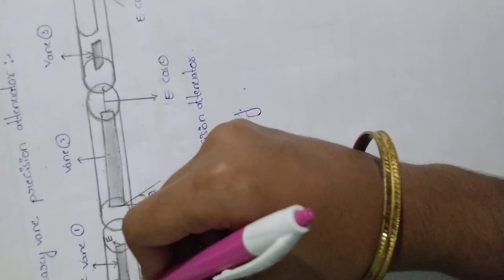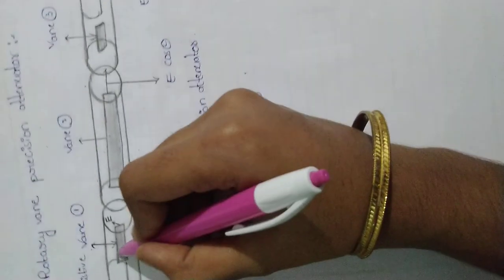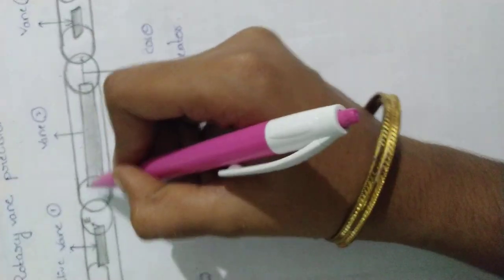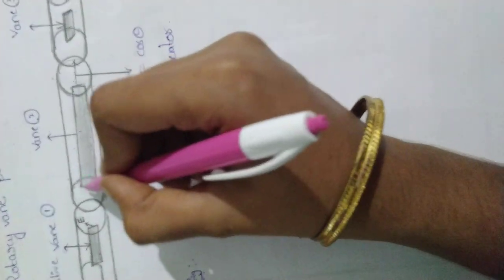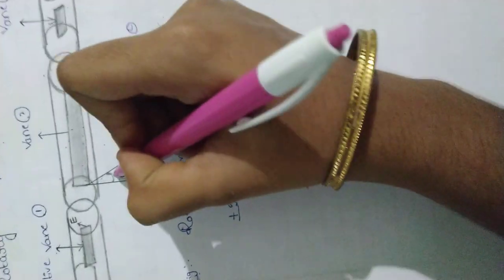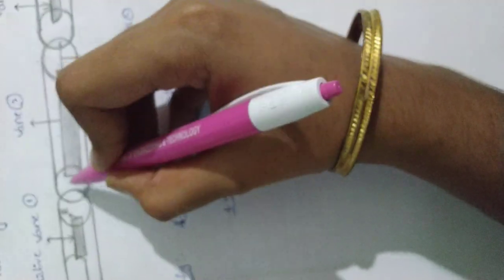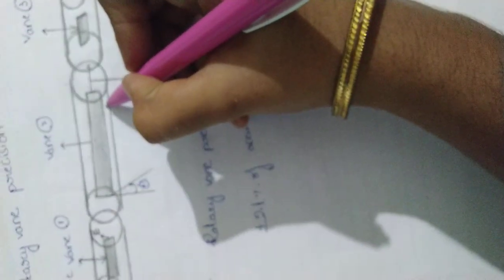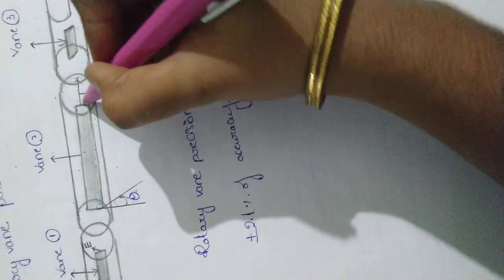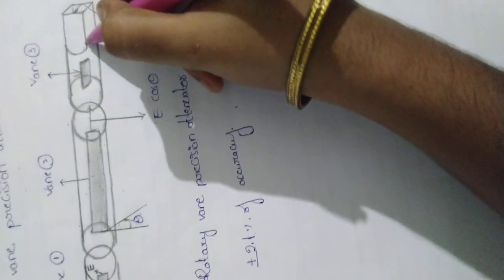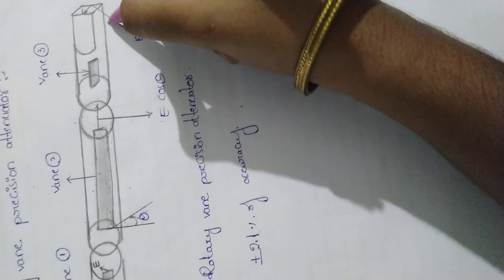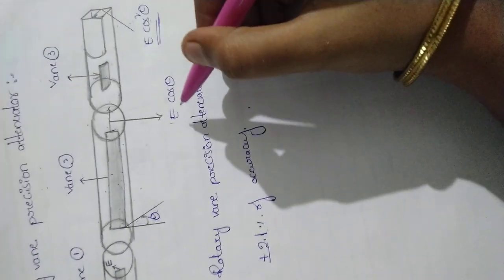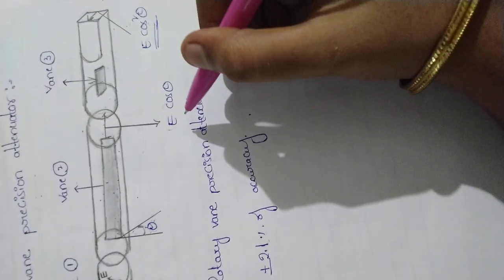The vane at the front end allows vertically polarized waves and blocks horizontal waves. The center vane rotated by an angle theta takes vertically polarized waves as input and sends out E cos theta component from vane 2. Vane 3 provides another cos theta and gives output of E cos squared theta. This is the representation of Rotary Vane Precision Attenuator.